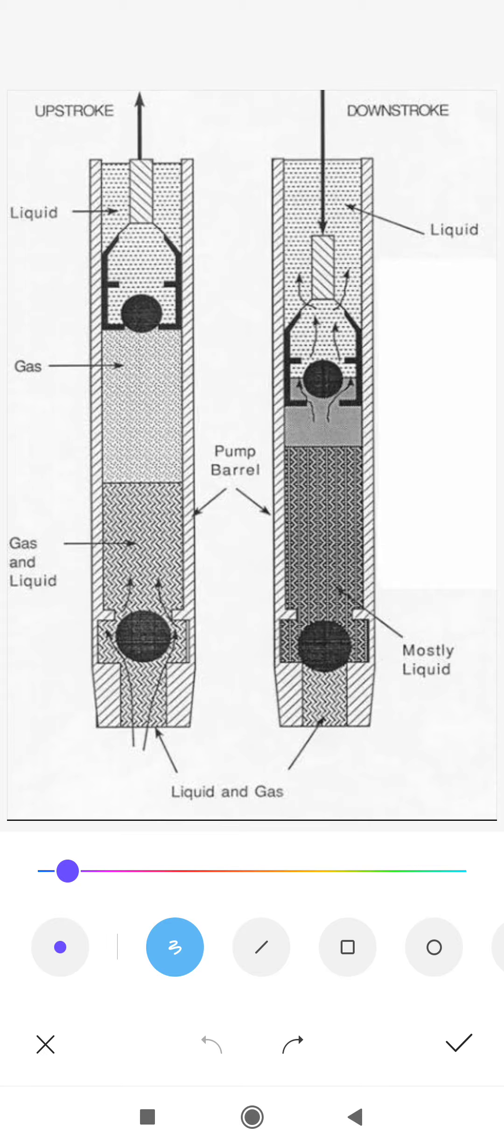The first part is the bottom valve, which is basically a ball valve mechanism. We have some cage type structure over here which will prevent the ball from moving further.